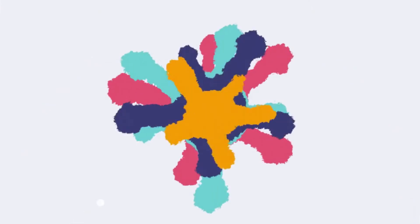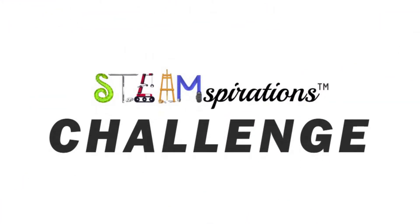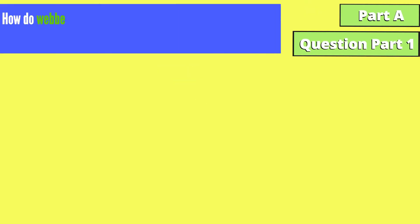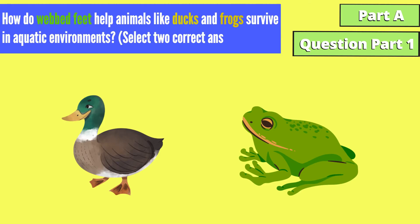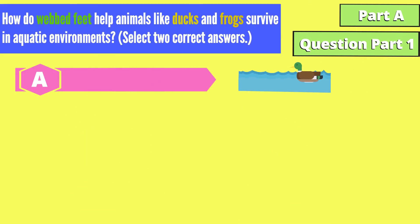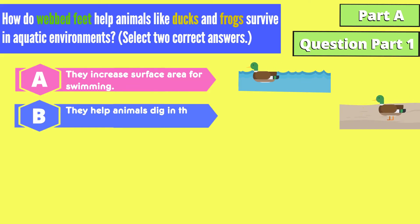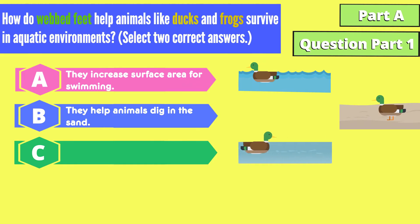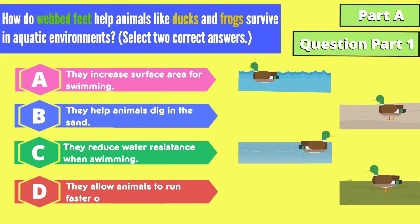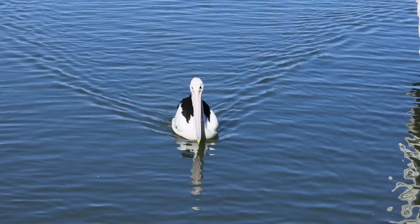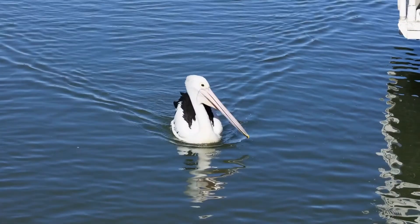Challenge time! Let's test your knowledge with some rigorous questions about structures, functions, and adaptations. Part A, Question 1: How do webbed feet help animals like ducks and frogs survive in aquatic environments? Select two correct answers. A: They increase surface area for swimming. B: They help animals dig in the sand. C: They reduce water resistance when swimming. D: They allow animals to run faster on land. Quick tip: Think about how webbed feet interact with water and how these features enhance swimming and movement in aquatic environments.